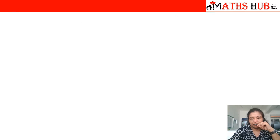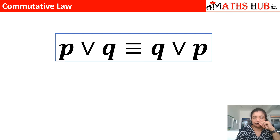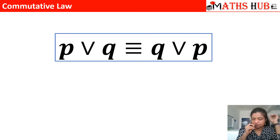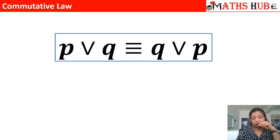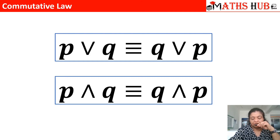The second law is the commutative law. The commutative law says P OR Q is equivalent to Q OR P — the two statements are commutative in nature. You can always alter the order, so they are said to commute with each other. Similarly the second sub-law can be traced by replacing the disjunction symbol with a conjunction symbol: P conjunction Q is equivalent to Q conjunction P.